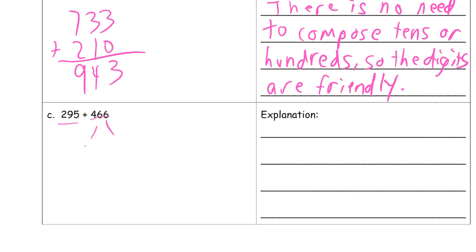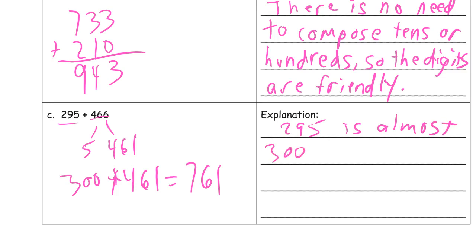Looking at this one here, that 295 is almost 300. Here the digits are not very friendly for this one because you'd have to compose tens, you'd have to compose hundreds. That's a bit of a mess, so it's just easier to look for this mental method. 295 is almost 300, so decomposing 466 makes easy mental math.